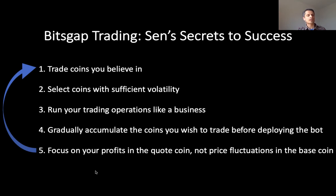Why can I say number five with such confidence? It's because if you go back to number one — trade coins you believe in — then it shouldn't be a big deal if the coin you're trading declines in value relative to USD or another stablecoin. It's kind of like being a diehard fan of a sports team: that team isn't going to win every season. They're going to have losing streaks, maybe really long losing streaks, but you'll continue being a diehard fan because you believe that one day they're going to win the championship. It's the same with trading: if you select coins you truly believe in, it shouldn't cause panic if you see them go down in value, because you believe that in the long run they're going to increase.